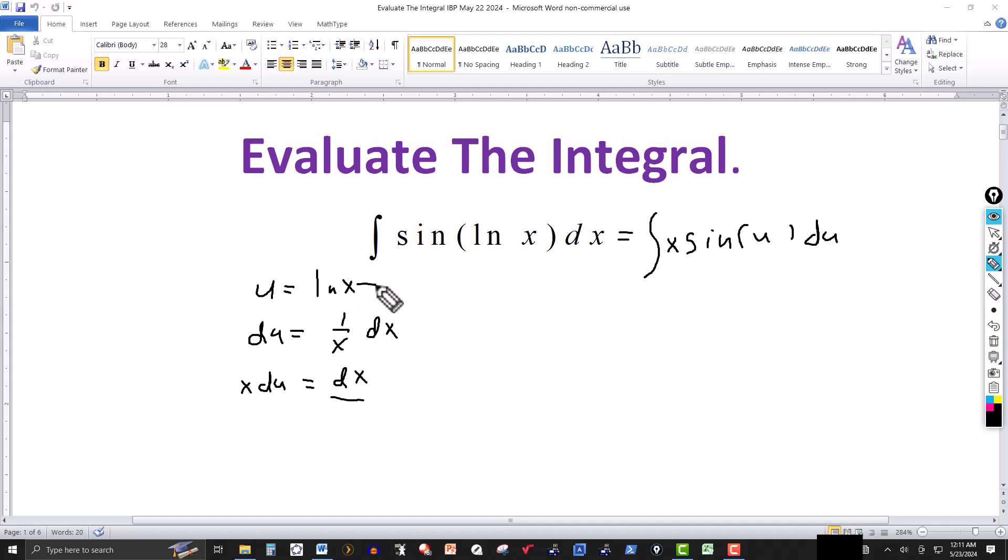But from this right here, this is base e right here. So this would tell me that x is equal to e to the u, by properties of logs. And then it just would replace this x here by e to the u. And you can take the rest of the way here. You have to use integration by parts. But this would be the setup of the integral involving u.